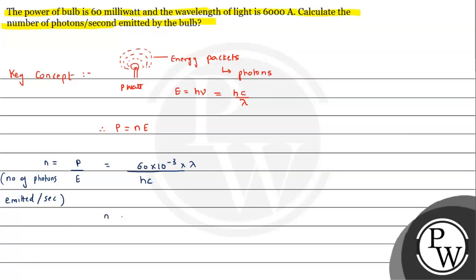From here, n = (6×10⁻² × 6×10⁻⁷)/(hc). Since 1 angstrom = 10⁻¹⁰ meter, we have 6000 angstrom = 6×10⁻⁷ meter. Planck's constant h = 6.6×10⁻³⁴ and speed of light c = 3×10⁸ m/s.